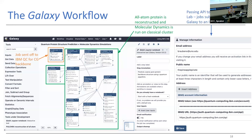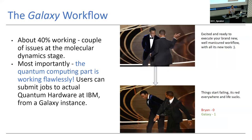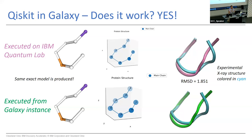If you have IBM credentials, all you have to do is pass your IBM token through user preferences and you can submit jobs to a quantum computer from a Galaxy instance. You can specify the backend — machines ranging from 5 qubits all the way to 127 qubits. The Docker image also pulls in all the Qiskit tutorials, so if you're new to quantum computing, you can hit the ground running. The final confirmation from a Galaxy instance matches exactly what's shown at IBM Quantum Lab.